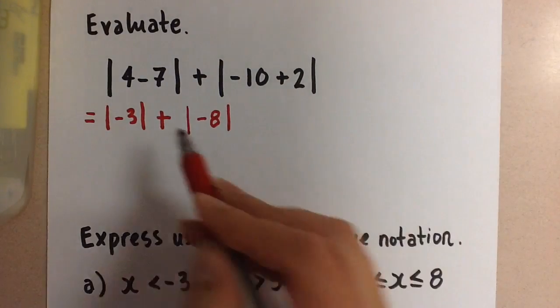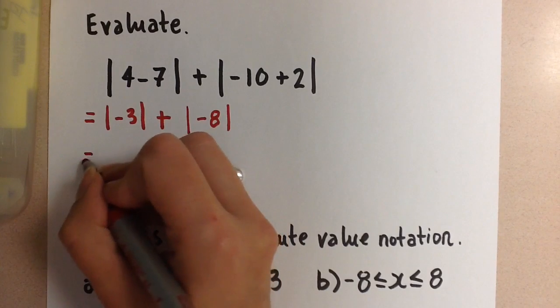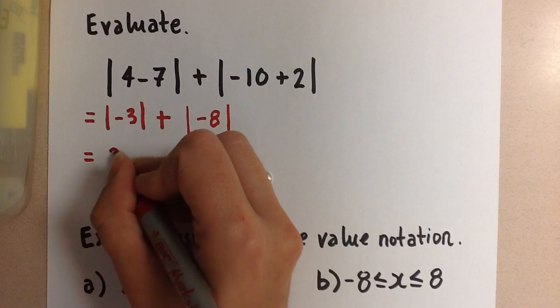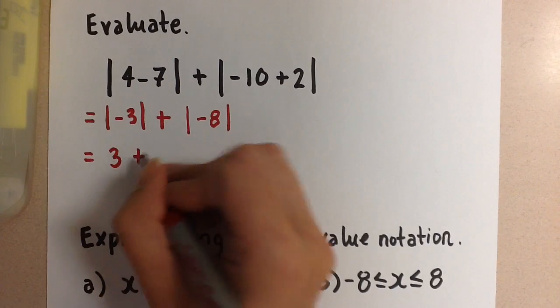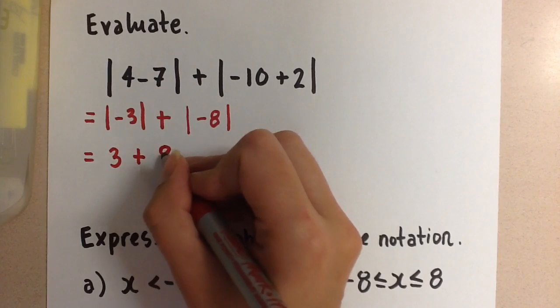Now we evaluate the absolute values of each of these numbers to get rid of those absolute value signs. So here the absolute value of negative 3 is positive 3 plus the absolute value of negative 8 is positive 8.